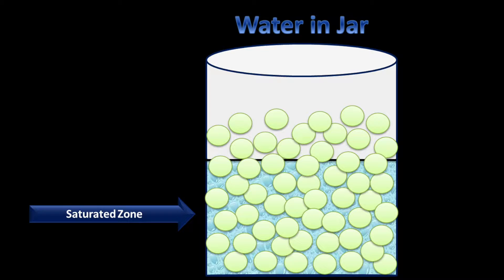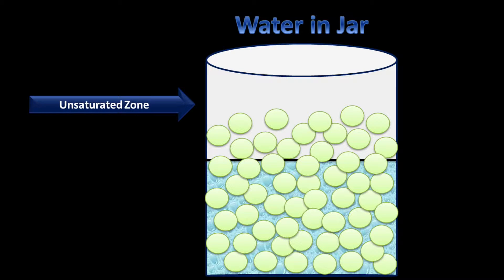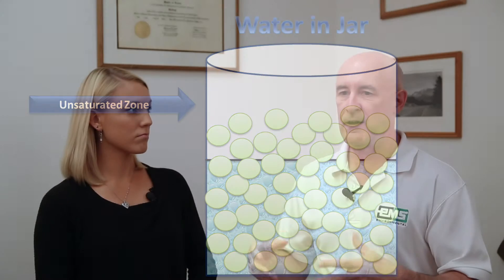Below, where the pore spaces between the marbles are filled with water, that's the saturated zone. Above the water table, where the pore spaces between the marbles are not filled, that's the unsaturated zone. Now, in real life, when you put a well below the saturated zone, if you can get water out of it, we call that an aquifer.